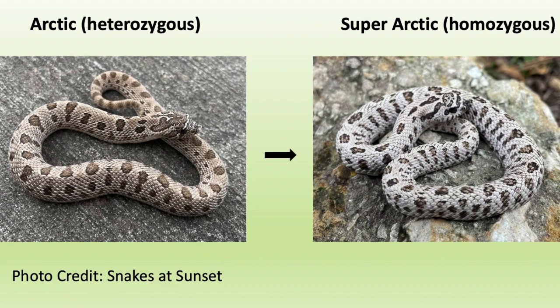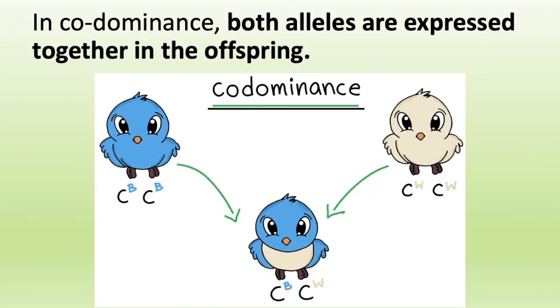In the super form of the arctic — the homozygous form where the snake has two copies, one from each parent — you get a totally different looking snake. The background is almost completely white, there's even more dark concentration not only around the saddles but inside them as well, and the snake has a completely black eye. When you look at a super arctic baby when it's first born, it looks completely different than just an arctic hognose snake.